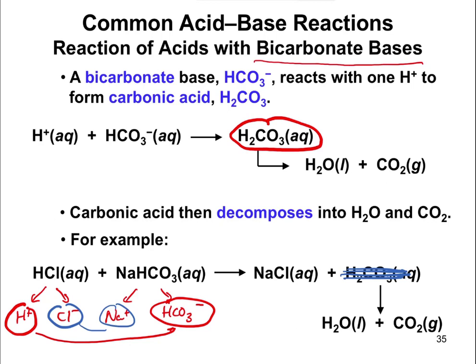Bicarbonate bases are actually really important — this is one of the main components that helps regulate the pH of our blood. We'll talk about buffers in another video shortly, but this bicarbonate makes an important buffer that helps keep our blood pH right around 7.4.